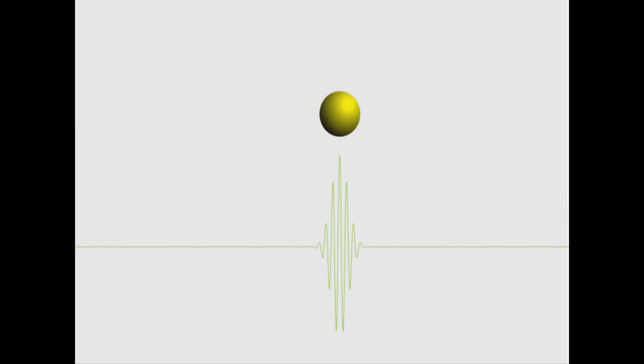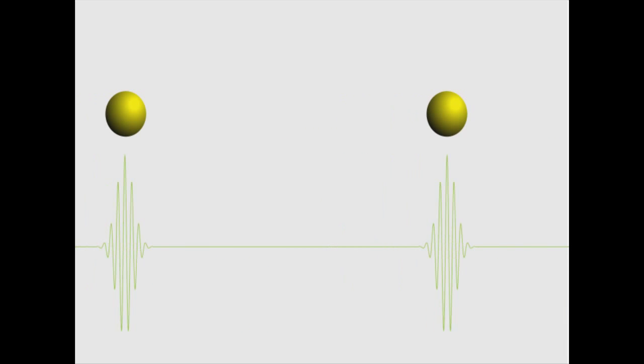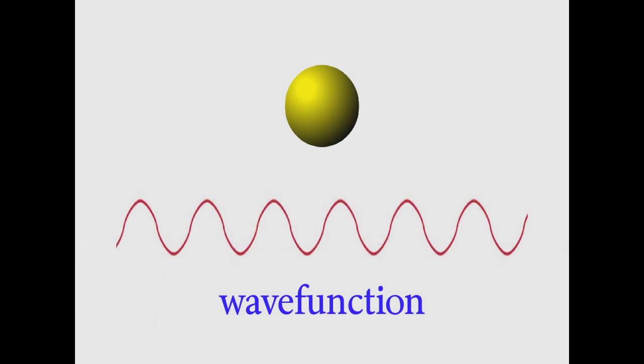I told you that the wave that describes a particle is called a wave function, and in that video I used a sine wave as an example wave function, but real wave functions actually have more complicated shapes than that. What a wave function really looks like depends a lot on what particle we're interested in and what things are in its environment.